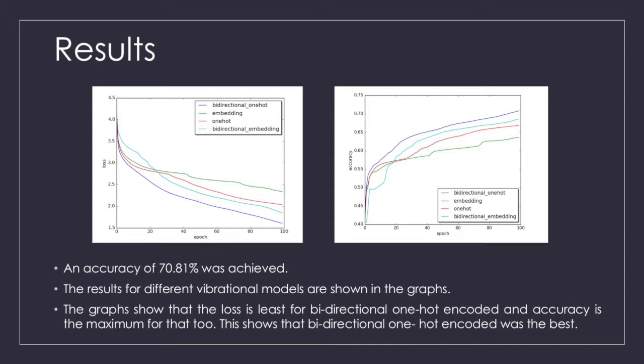There were four models compared. The four variational models were: first, bi-directional one-hot encoded; second, embedding; third, one-hot encoded; fourth, one-hot embedding.